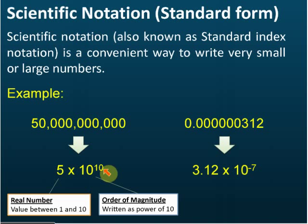To solve problems that involve scientific notations. So for very small numbers, like this one, we can write it as 3.12 times 10 to the power of negative 7.